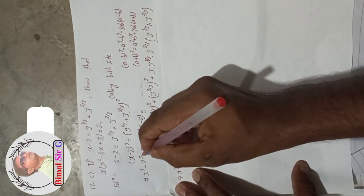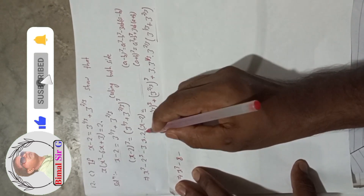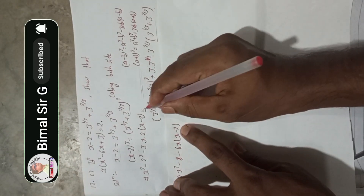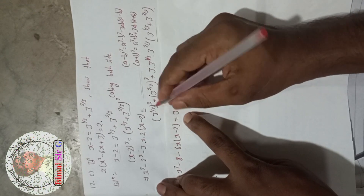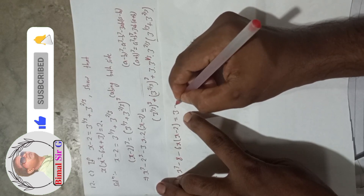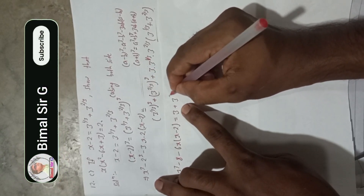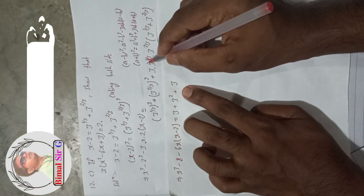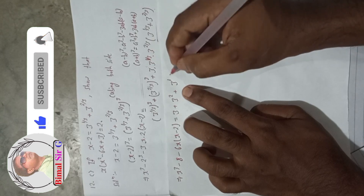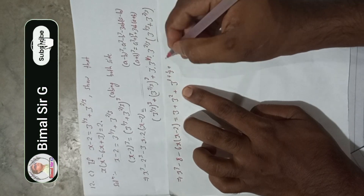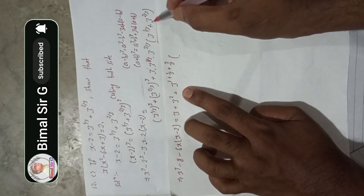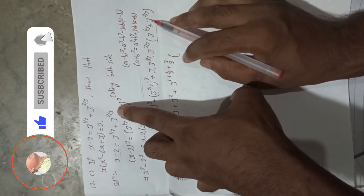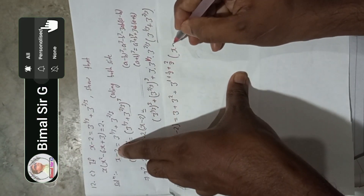So this implies: on the left side we have x³ minus 8 minus 6x(x minus 2). On the right side, 3 to the power 1/3 cubed is 3, plus 3 to the power 2/3 cubed gives 3², which is 9. Then for the 3ab term, adding the powers: 1 plus 1 by 3 plus 2 by 3 gives 3 to the power 2, which is 9. And we substitute x minus 2 for 3^(1/3) + 3^(2/3) in the bracket.